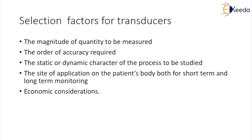Now let us learn the factors on which the selection of transducers depends for the study of a specific phenomenon. The first one is the magnitude of the quantity to be measured. Next is the order of accuracy required — for example, in a critical condition, a very important parameter such as variation in body temperature must be measured with very high accuracy. Next is the static or dynamic character of the process to be studied — the selection depends on whether process parameters change with time or not.